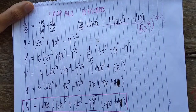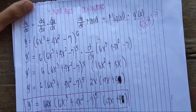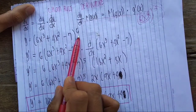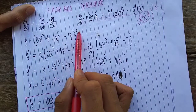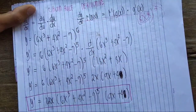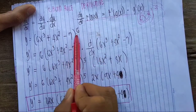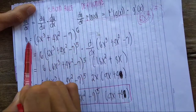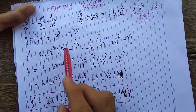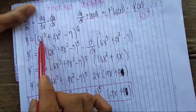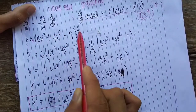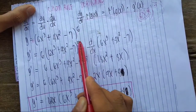Here is our first example: y = (6x³ + 4x² - 7)⁶. Since our formula calls for the chain rule, we will apply the constant multiple rule along with the power rule. So: 6 times g(x) — which is (6x³ + 4x² - 7) — raised to the power of 6 minus 1, giving us exponent 5.